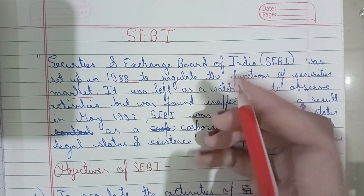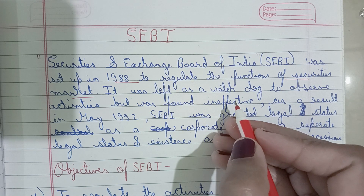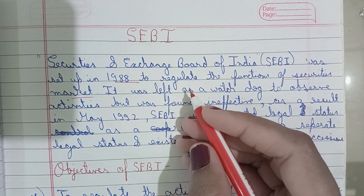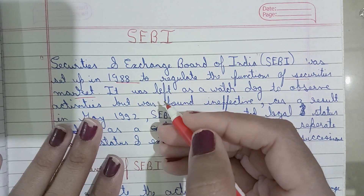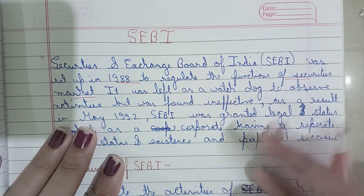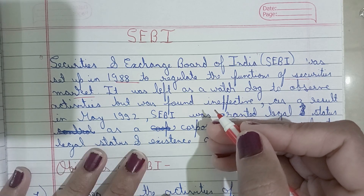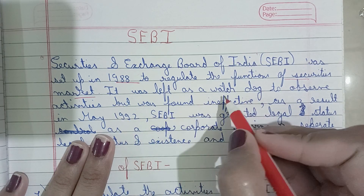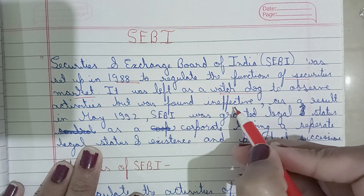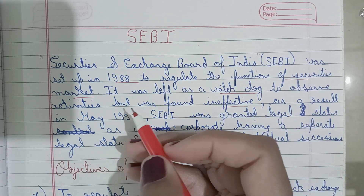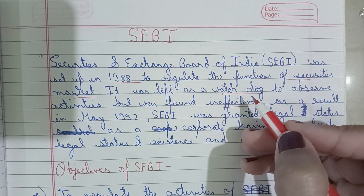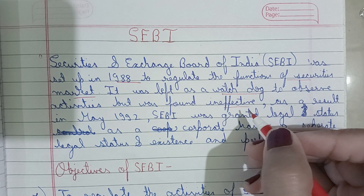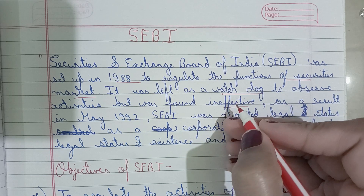The securities market — which means that the stock exchange is called the securities market — was set up so that all stock exchange works in a regulated way. SEBI was initially set up as a watchdog to observe activities. We also call SEBI a watchdog because its main job was to keep all the securities exchange in check so that no one engages in fraudulent activities.